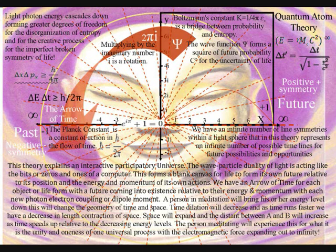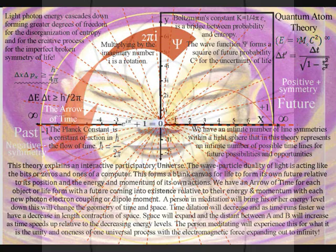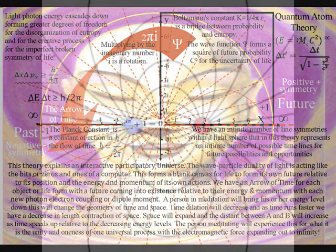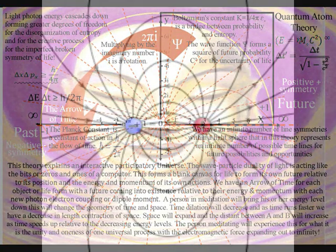Time dilation will decrease, and as time runs faster, we have a decrease in length contraction of space. Space will expand and the distance between A and B will increase as time speeds up relative to the decreasing energy levels.